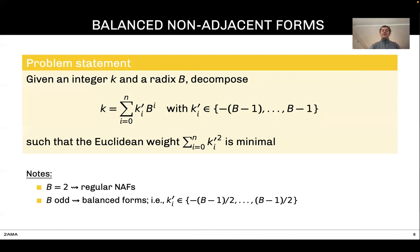What I'd like to do in this talk is to find the best possible decomposition so as to minimize that quantity. The sum of the square of the digits is called the Euclidean weight. The goal is to find the decomposition that minimizes that value. In this case, the digits can be positive or negative, in the range minus B minus one up to B minus one.